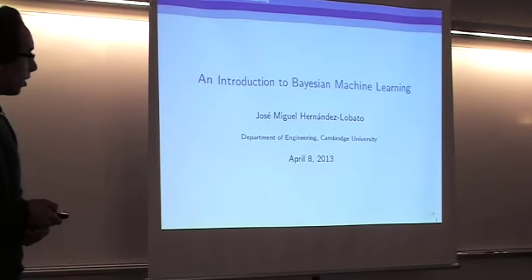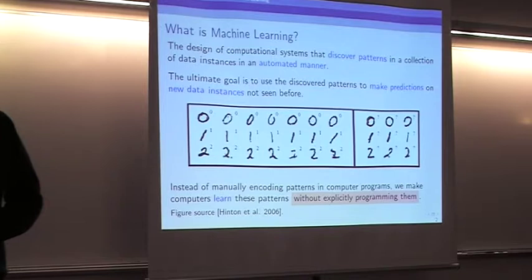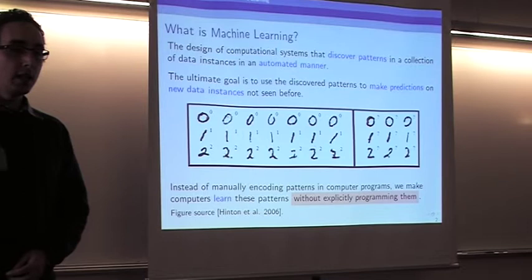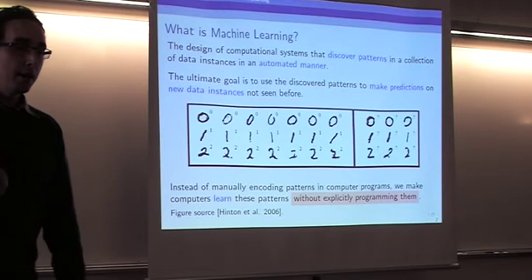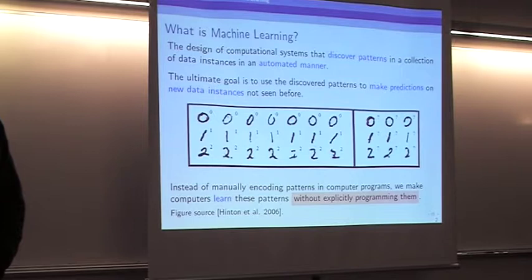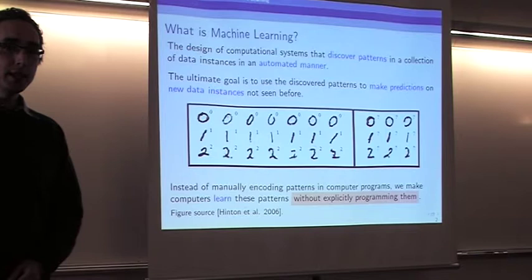Machine learning can be understood as just the design of computational systems that can discover patterns in a collection of data instances in an automatic manner. By automatic manner it means that we just feed the data to a machine learning algorithm and it will identify the patterns present in that data without us having to specify the form of those patterns. The ultimate goal in machine learning is to make predictions on new data instances using those patterns.